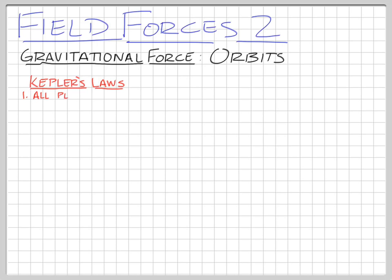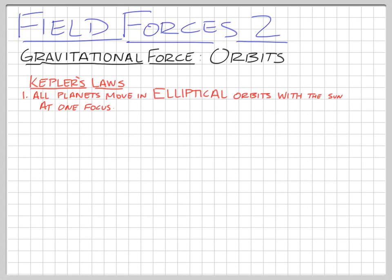Before we got to Newton's gravitation, we had Kepler's three laws of planetary motion. They're all observational laws — he didn't have a 'why'; Newton provided that. The first law is that all planets move in elliptical orbits with the Sun at one of the focuses, one focus. An ellipse is kind of an oval shape but with some mathematical specificity, and the Sun is at one of those focal points.